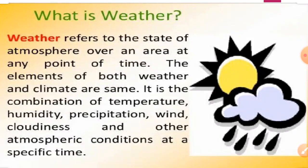Let's see in detail about weather and climate. Weather refers to the state of atmosphere over an area at any point of time. The elements of both weather and climate are the same. It is the combination of temperature, humidity, precipitation, wind, cloudiness, and other atmospheric conditions at a specific time.